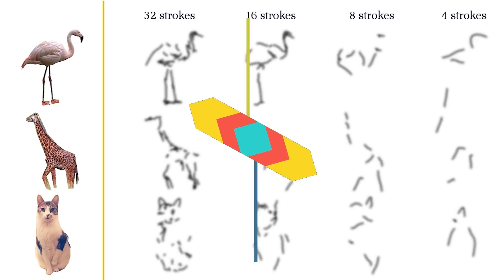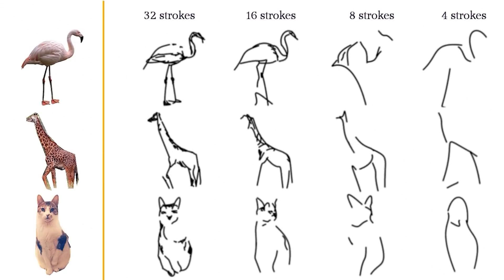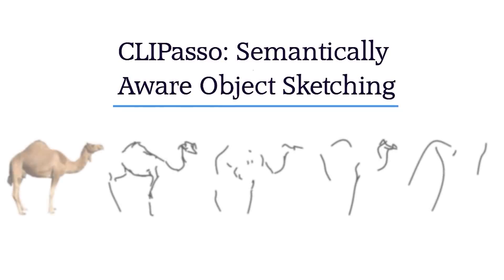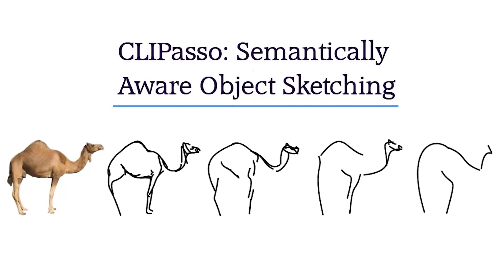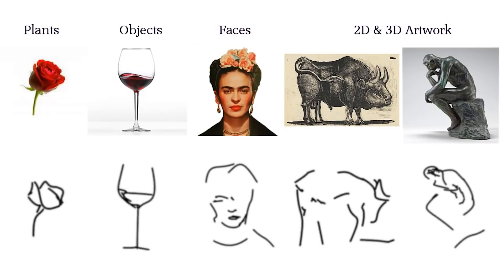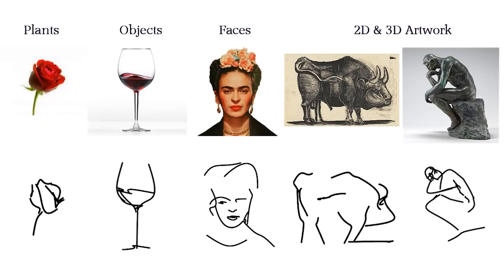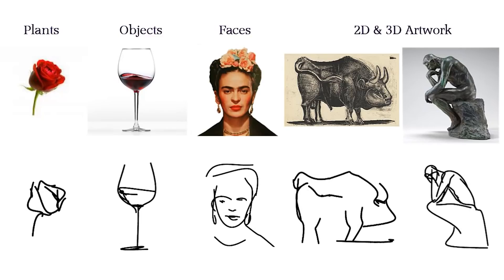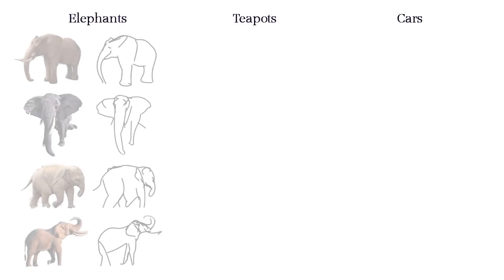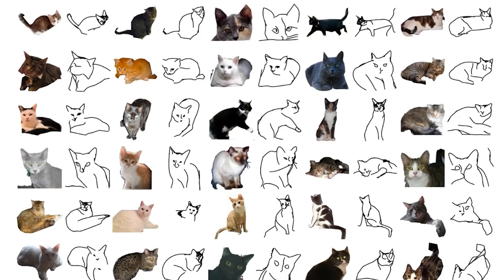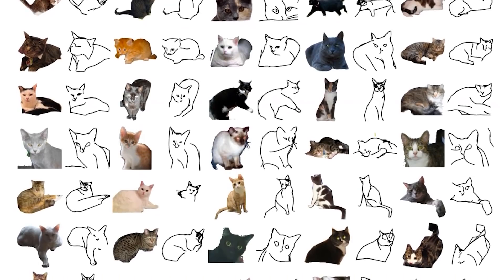You can also check out this AI tool that generates sketches based on images. It introduces a method for performing CLIP-guided semantically aware object sketching, or in short, CLIPasso. This optimization-based implementation of the CLIP model converts an image of an object to a sketch, allowing for varying levels of abstraction while preserving its key visual features. By extracting the salient region from the input image, it allows you to define the initial location of the strokes.